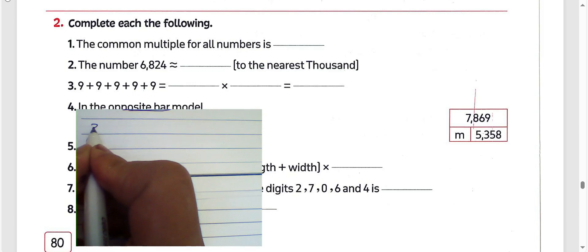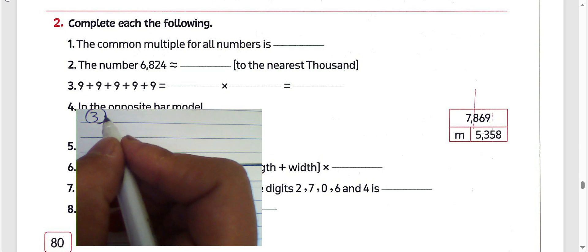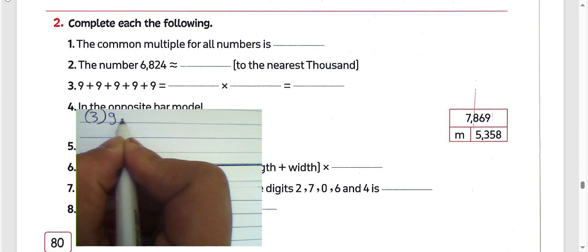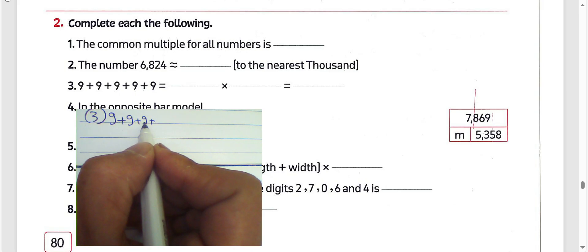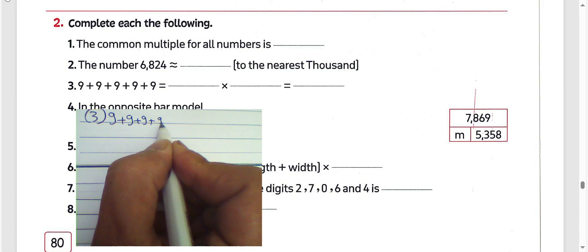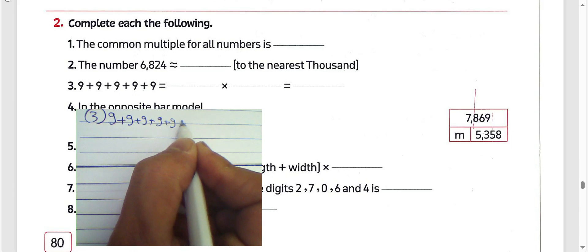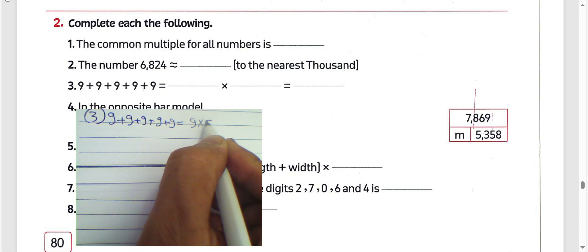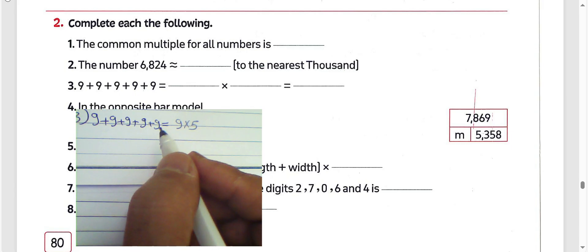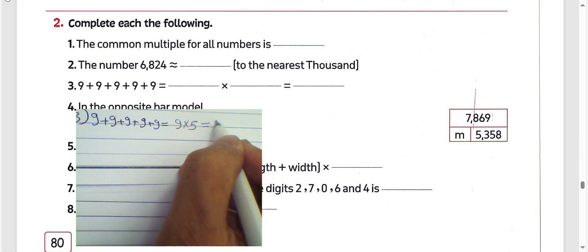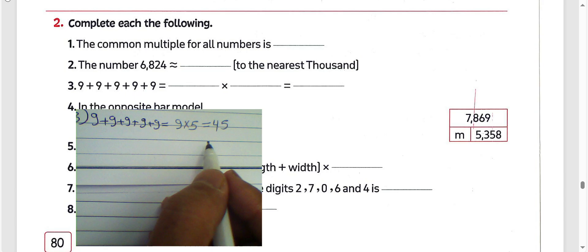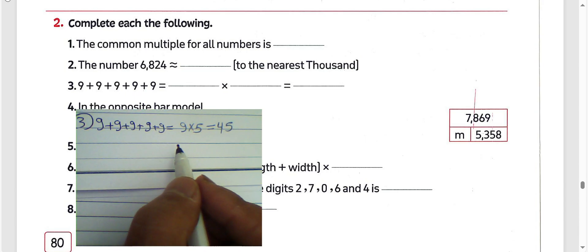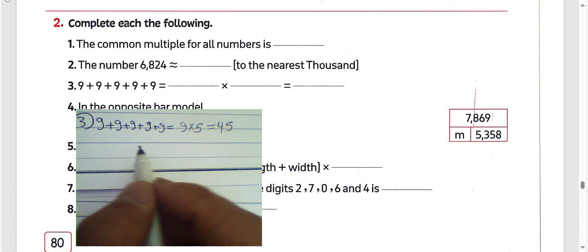Next, question number 3: 9 plus 9 plus 9 plus 9 plus 9 — that is five 9s. It will be 9 times 5 equals 45. And this is because 5 times 9 equals 45. So in question number 3, the result will be 45.